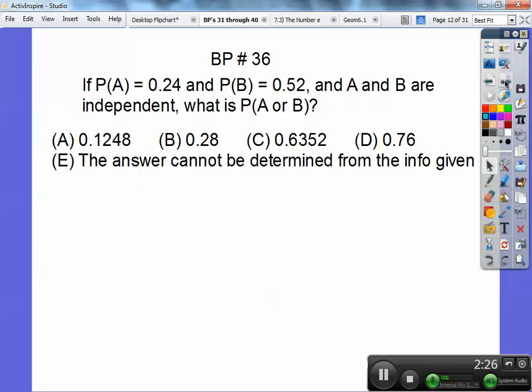Here a probability of A is 0.24. The probability of B is 0.52. And A and B are independent. What's the probability of A or B? Well, remember this. Since it's independent, we got to do the probability of A or B is the probability of A plus the probability of B minus their intersection.